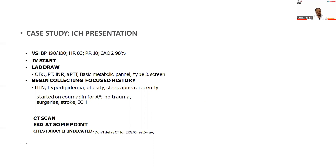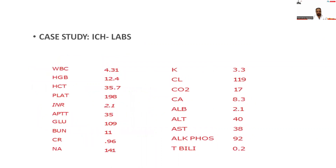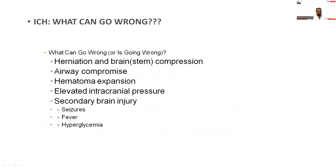There was a past history of hypertension, hyperlipidemia, obesity, sleep apnea, and the patient was recently started on an anticoagulant for atrial fibrillation. There was no history of trauma, surgery, stroke, or intracerebral hemorrhage. CT scan was done; meanwhile ECG and chest X-ray were done. The CT scan showed acute intraparenchymal hemorrhage at the left basal ganglia, about 3.2 x 1.5 cm, extending into the left ventricle. A small amount of blood was observed in the right ventricle and third ventricle. Labs were normal except the INR, which was 2.1.